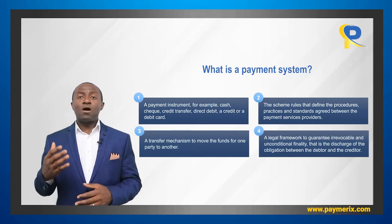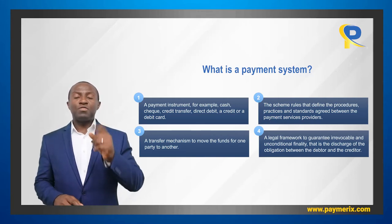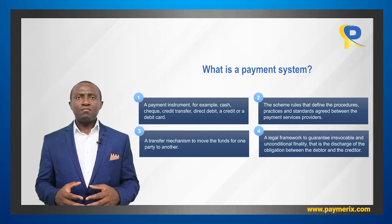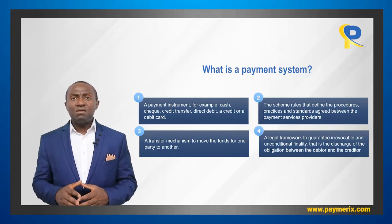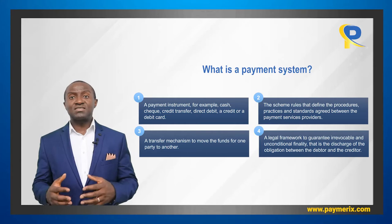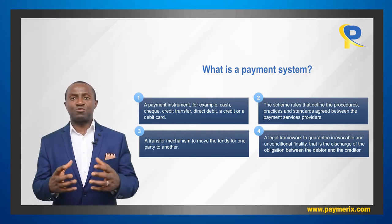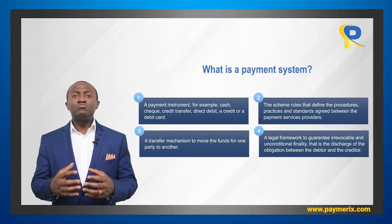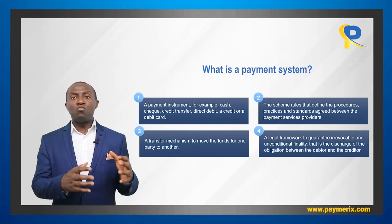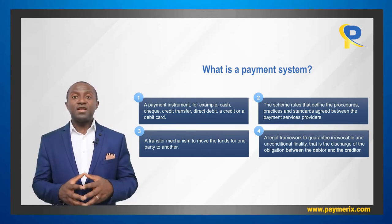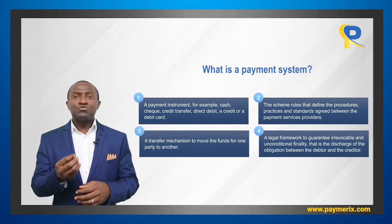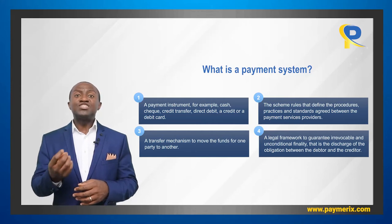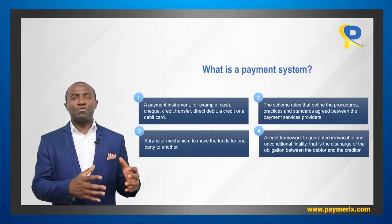A payment system requires four things. One, a payment instrument like cash, checks, credit transfer, or a debit card. Two, the scheme rules that define the procedures, practices, and standards agreed between the payment service providers that join the system. Three, a transfer mechanism to move the funds from one party to another. And four, a legal framework to guarantee irrevocable and unconditional finality — that is, the discharge of obligation between the debtor and the creditor.